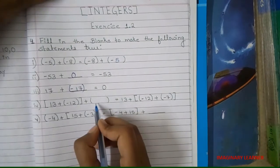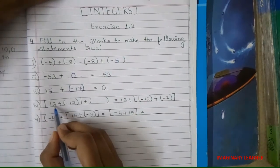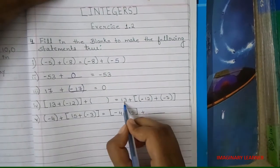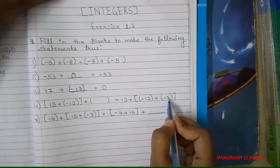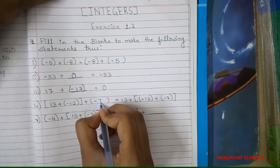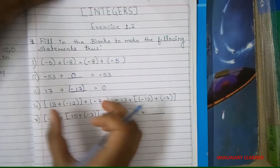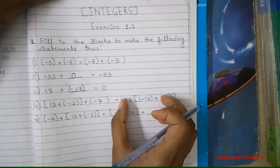Fourth: 13 plus minus 12 plus blank equals 13 plus minus 12 plus minus 7. So here we will add minus 7, so the equation is equal on both sides.